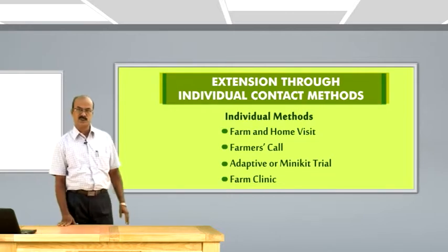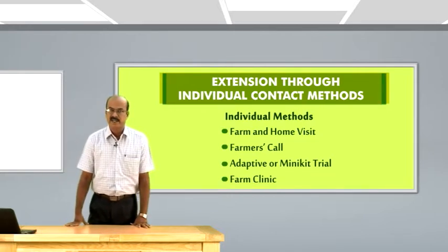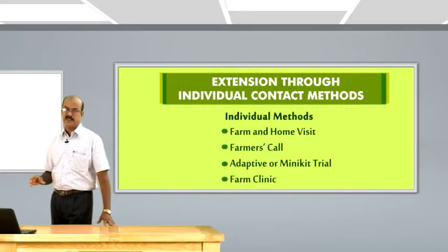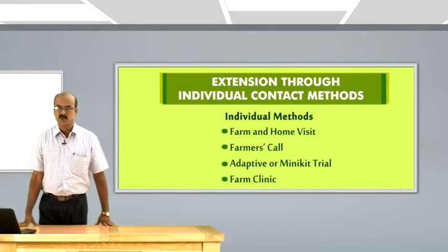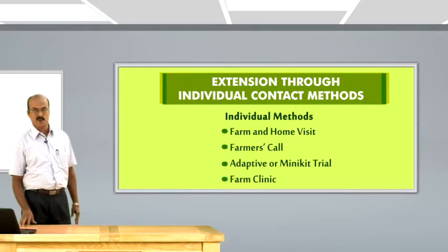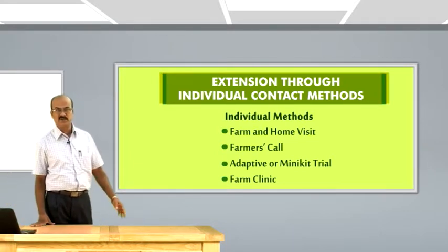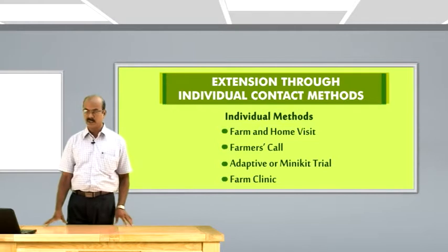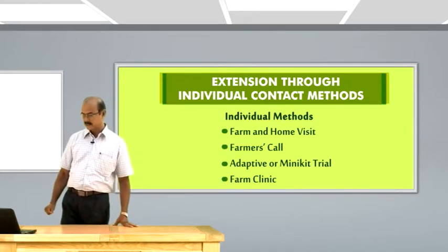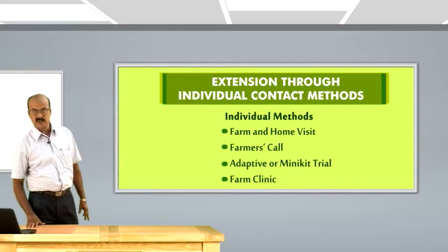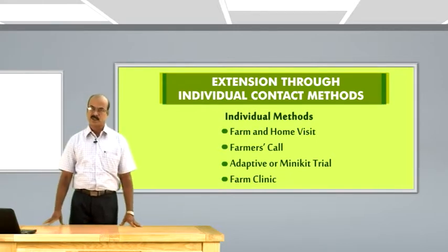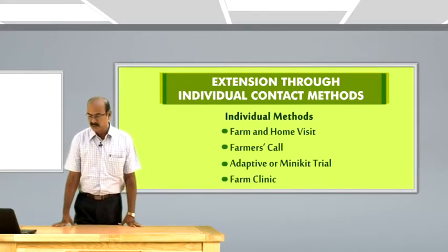The last individual contact method is the farm clinic, also known as agri clinic. The name itself — clinic — means diagnostic work. It involves an in-depth analysis of any problems or issues in the field situation. The extension worker diagnoses the field problems and suggests detailed solutions, offering information and techniques accordingly.